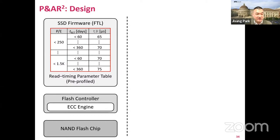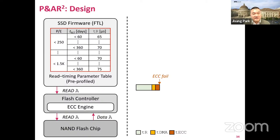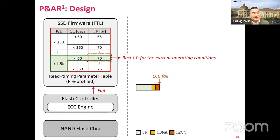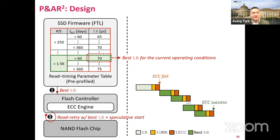Let me describe the overall design of our PR2 and AR2. We propose SSD manufacturers incorporate a read timing parameter table in their SSD so that the SSD firmware can get the best read timing parameters depending on current operating conditions such as PE cycles and retention time. When a read-retry failure occurs, the flash controller notifies the SSD firmware, which queries the table with current operating conditions to send the best timing parameters to the flash controller. The flash controller then performs read-retry with reduced timing parameters using AR2, while speculatively starting the next retry step using PR2, until ECC decoding succeeds.